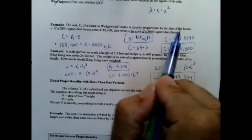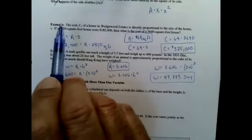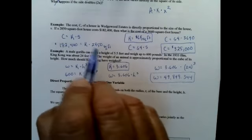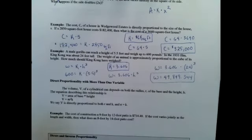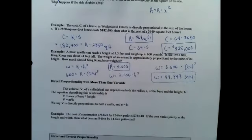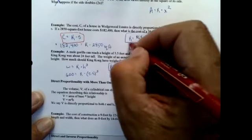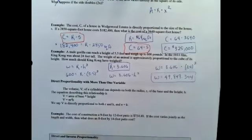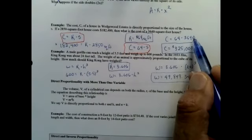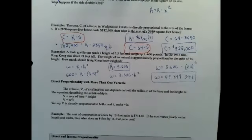Good. I'm going to pause for a second. Cost of a house in Wedgwood varies directly to the size of the house. 2,850 square foot house, 182,400 is the price. I come up with a k. Now I have my new equation. Here was my first equation, I solved to find k, came up with a new equation. So now if I know the square footage of the house, I should be able to come up with the price.